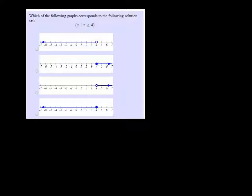This one says: which of the following graphs corresponds to the following solution set? It's the set of all x such that x is greater than or equal to 4. We want the arrow going to the right because it's greater than, and the 4 is included, so we want a closed dot. So it's going to be the second choice.